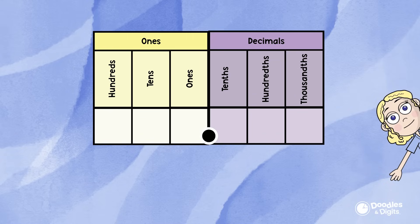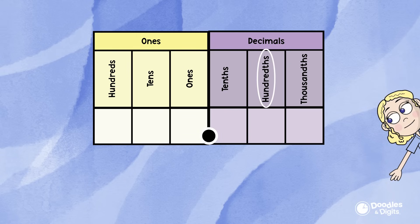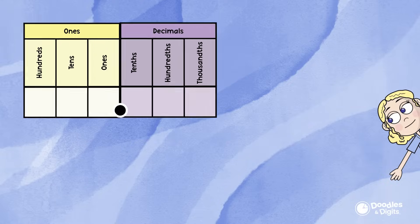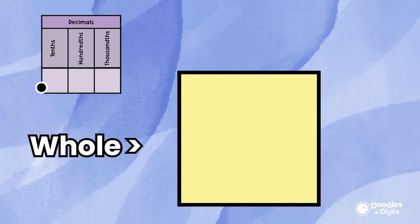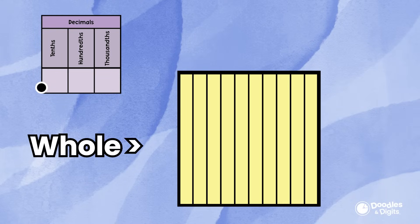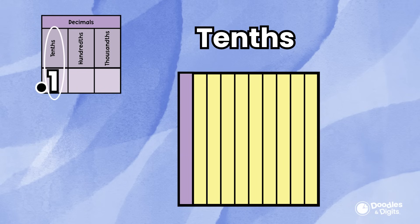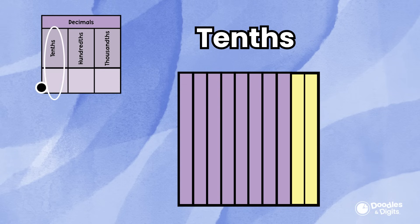Now we have tenths, hundredths, and thousandths. We're going to take our whole and divide it into ten pieces — these are tenths. This is what one tenth, two tenths, three tenths, four tenths, five tenths, six tenths, seven tenths, eight tenths, nine tenths, and ten tenths look like. Notice that ten tenths make one whole.